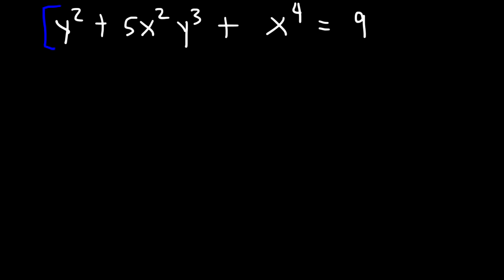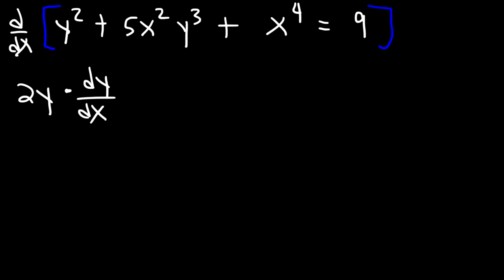Step 1: we need to take the derivative of both sides of the equation with respect to x. Every time you differentiate a y variable, you need to add dy dx to it. So the derivative of y squared is 2y, times dy dx. When you differentiate an x variable, you get dx over dx, which is 1, so you don't have to worry about any dx. Now how can we differentiate 5x squared y cubed? Notice that we have two different variables attached to each other, and so we need to use the product rule.